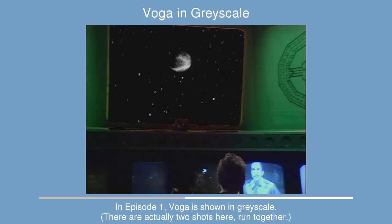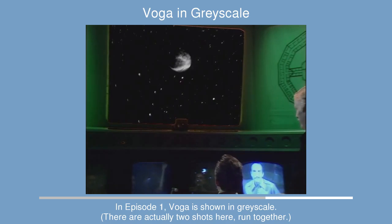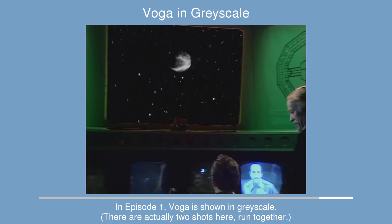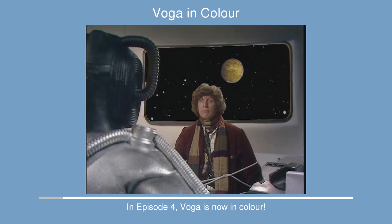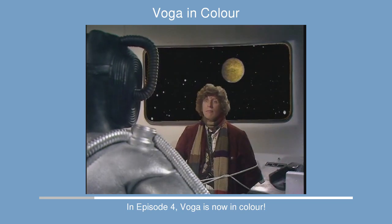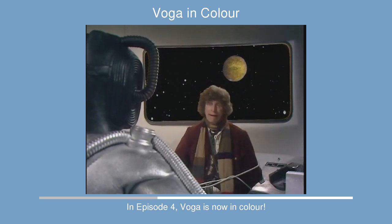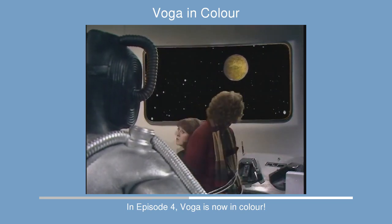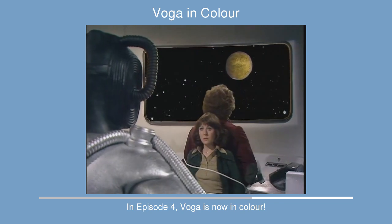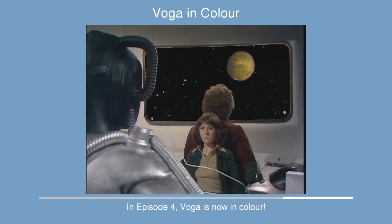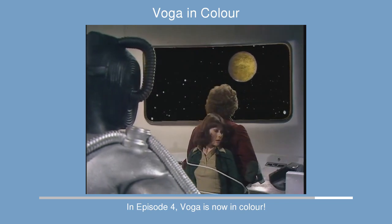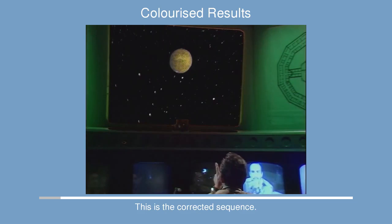There are a few issues with the special effects. For one, the planet Voga is shown on the scanner screen in greyscale in the early episodes, and then in later episodes it's in colour. So it'd be nice to replace the greyscale images with colour versions. This turns out to be quite easy — it's a simple matter of finding an appropriate shot from one of the later episodes.